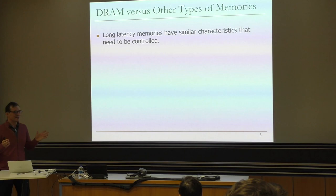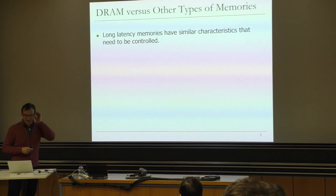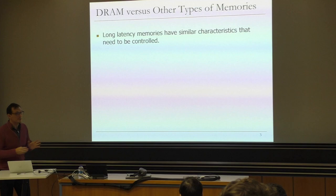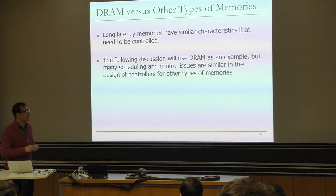Memory controllers are hardware structures that control memory. Even though we're going to talk a lot about DRAM, other types of memories also need memory controllers — actually, any memory needs a controller. Especially long-latency memories have similar characteristics that need to be controlled. The following discussion will use DRAM as an example, but many scheduling and control issues are similar in other types of memories.